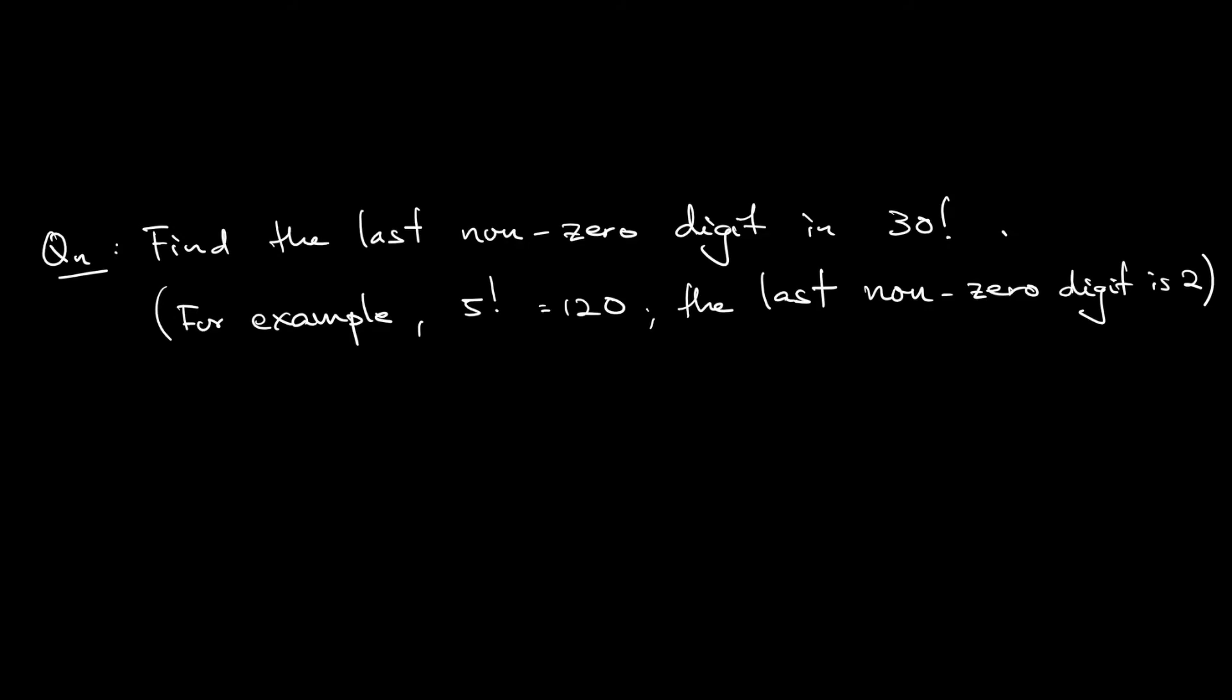The question asks us to find the last non-zero digit in 30 factorial. So the last non-zero digit. 30 factorial of course ends with a string of zeros. What is the last one that's not zero? They give the example: 5 factorial is 120, so the last non-zero digit is the 2 here.